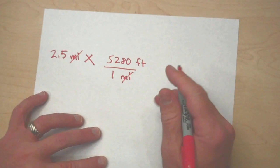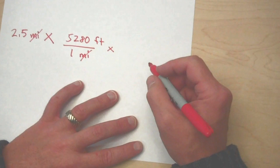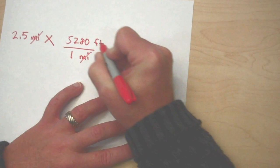Well, let's keep going. Now we need to convert feet into inches. So if I have feet here at the top, I need to put feet in the bottom. And so I would put that down as being 12 inches in one foot. I can now cancel out the feet and I'm left with inches.